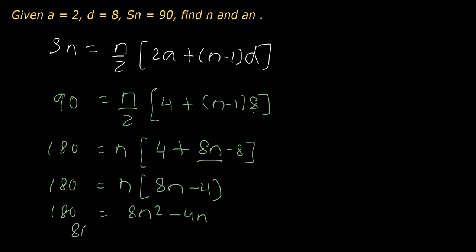Now writing in the standard form, it is 8n² - 4n. On transposing everything to the left, minus 180 = 0. We can reduce this before factorizing. Taking 4 as common, we'll get 2n² - n - 45 = 0.